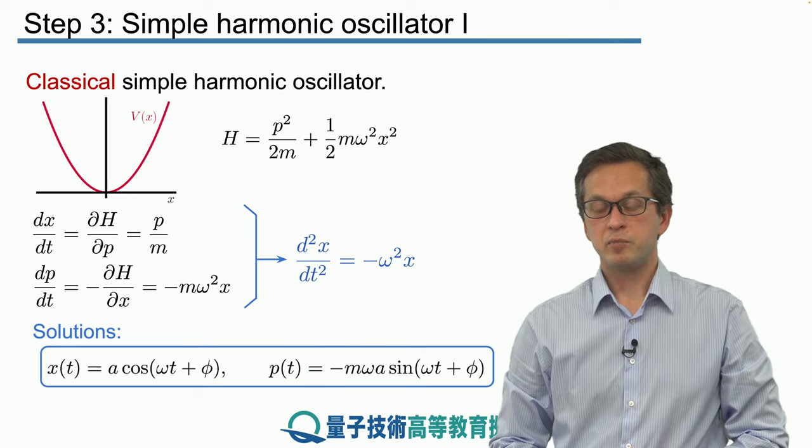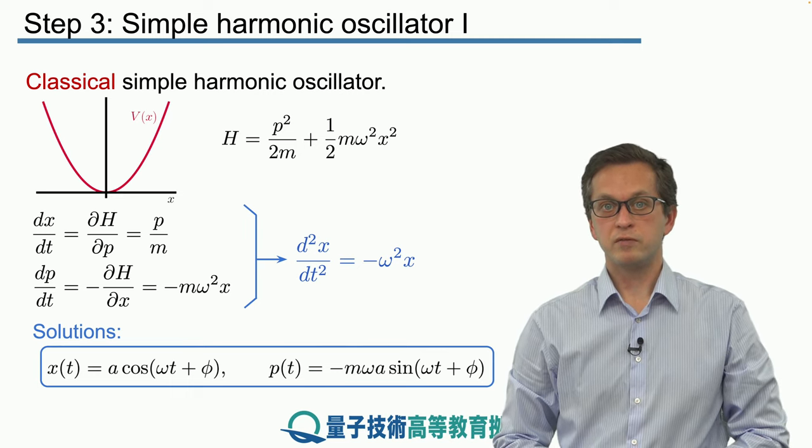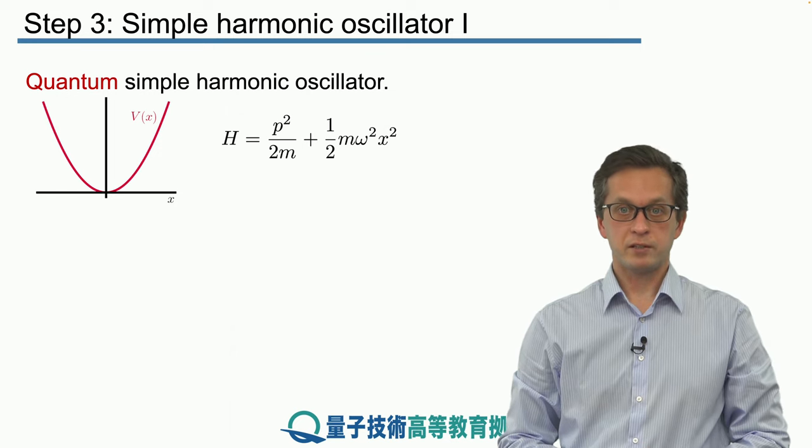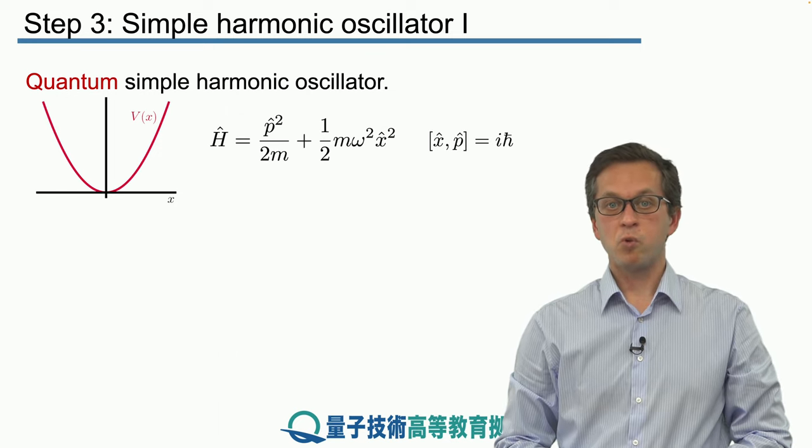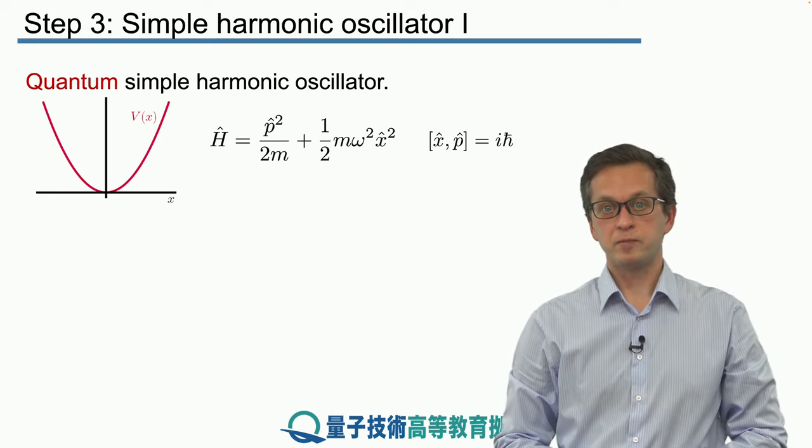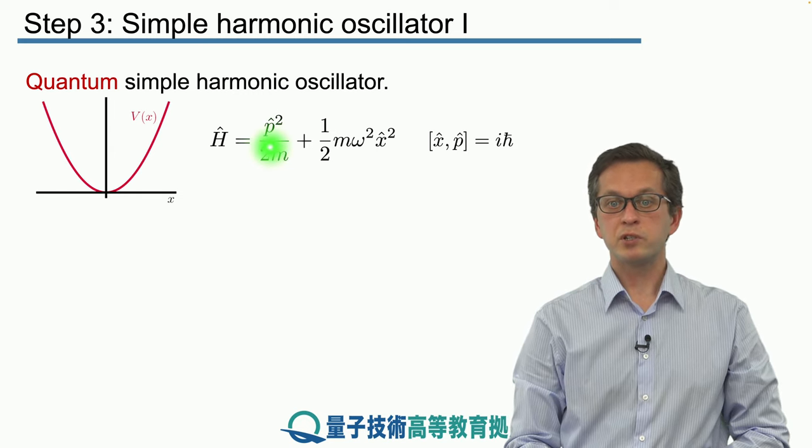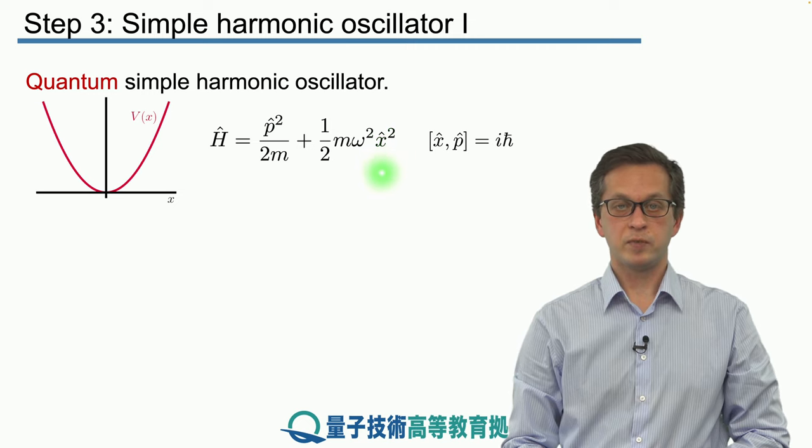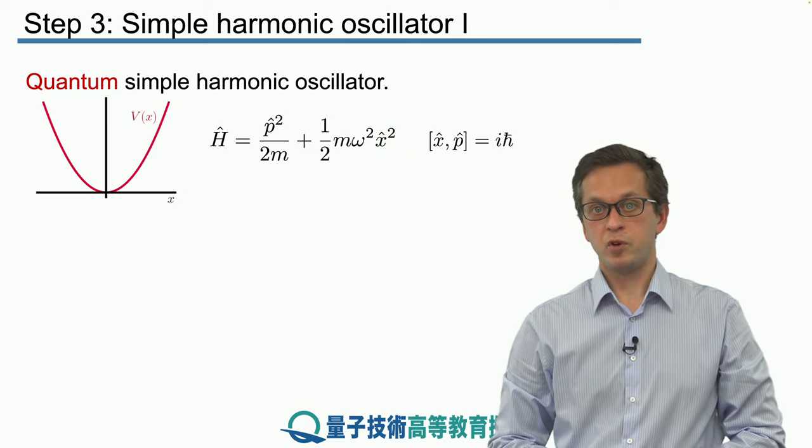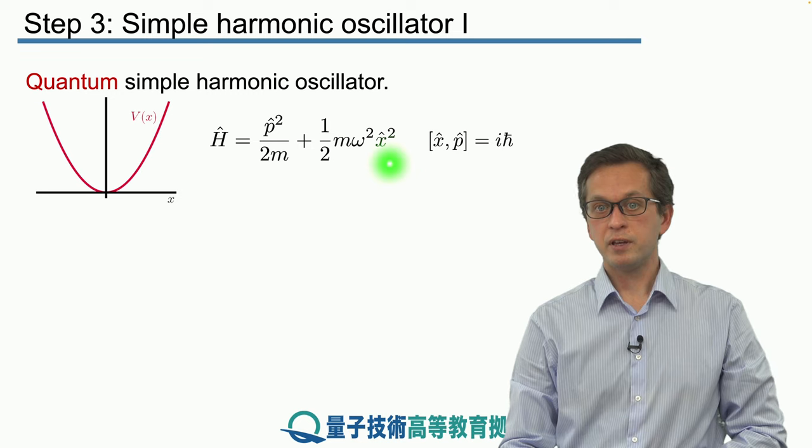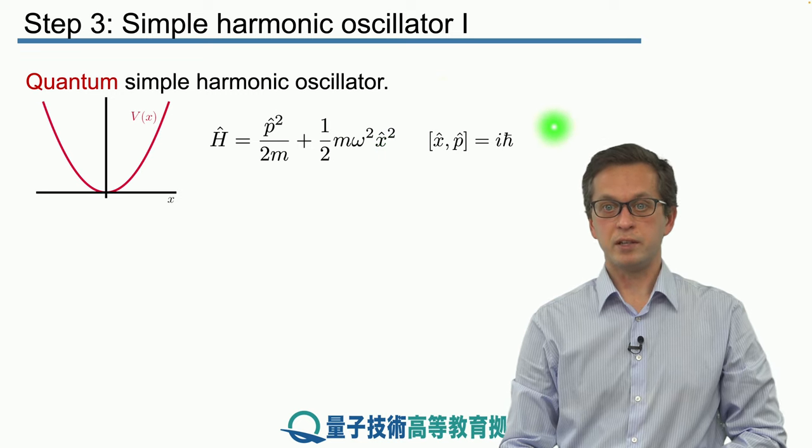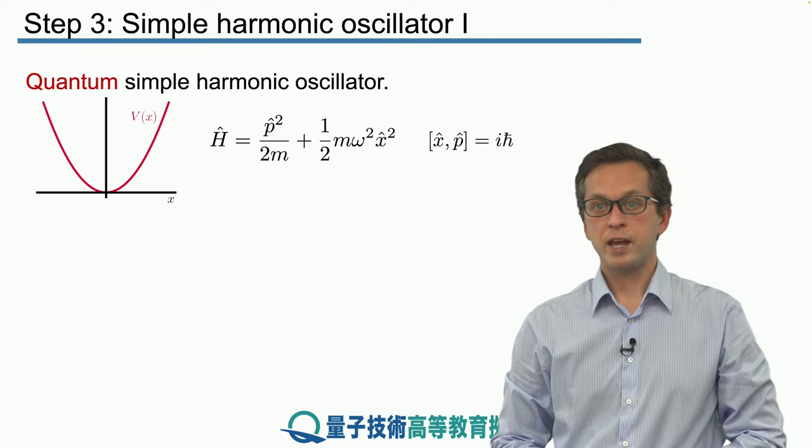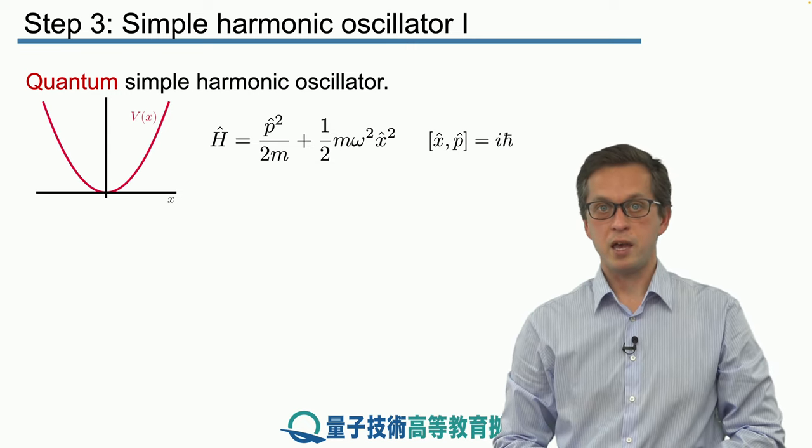We have seen that x and p are canonically conjugate variables in this case. So we can go ahead and quantize the whole system to obtain the quantum Hamiltonian h hat, given by the same expression where we just replaced p with p hat and x with x hat. These are our abstract quantum operators, and the only thing that we demand from them is that they satisfy the canonical commutation relation: the commutator of x hat and p hat is equal to i h bar.